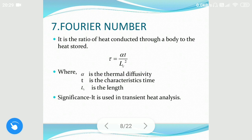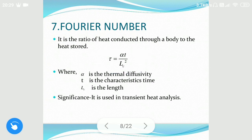The seventh is the Fourier number. It is the ratio of heat conducted to the body to the heat stored. Fourier number indicates how efficiently the body is conducting heat — the larger the Fourier number, the faster the heat is conducted. Fourier number is given as alpha·T divided by Lc squared, where alpha is the thermal diffusivity, Lc is the length, and T is the characteristic time.